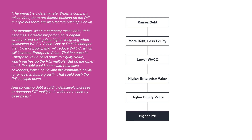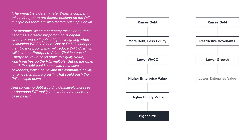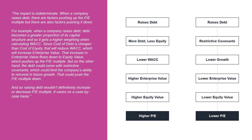But on the other hand, the debt could come with restrictive covenants, which could limit the company's ability to reinvest in future growth. That could push the PE multiple down. And so raising debt wouldn't definitely increase or decrease the PE multiple — it varies on a case-by-case basis.